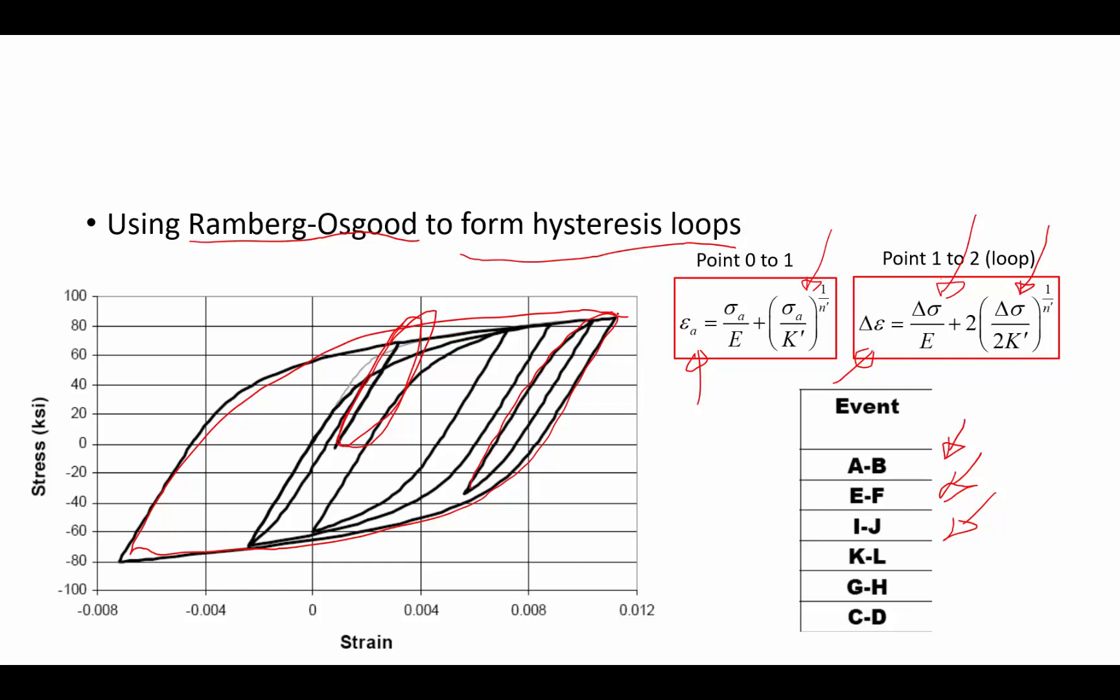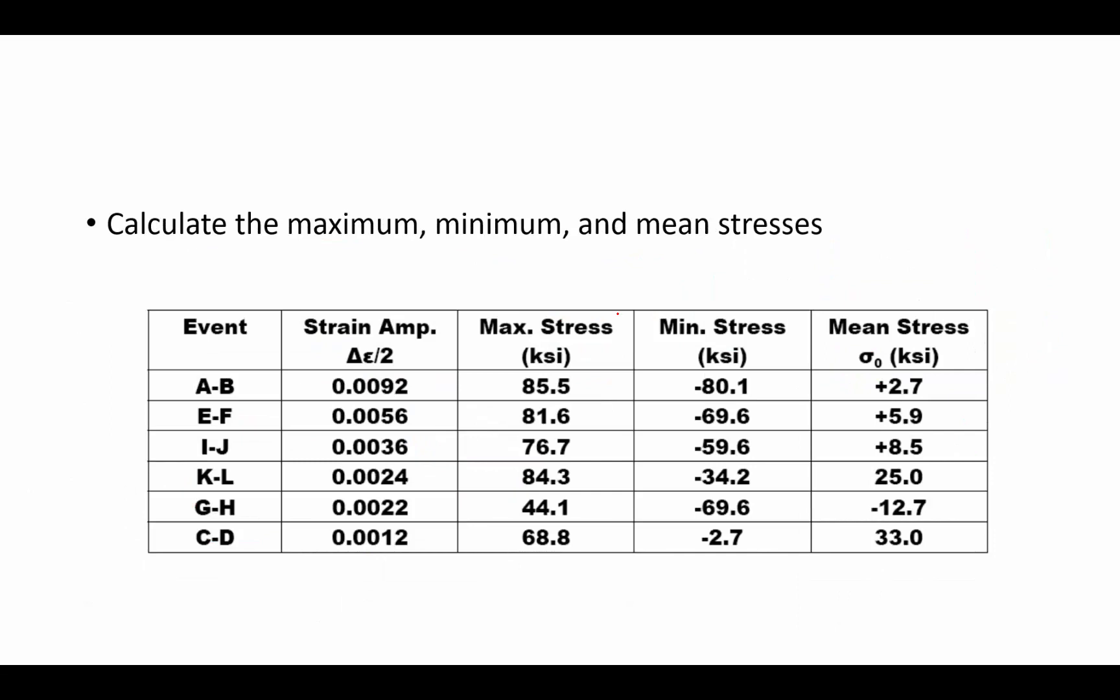Once we've formed these hysteresis loops, then we need to calculate what is the maximum, the minimum, and the mean stresses that these events are happening over. And why? Because then we can calculate what the stress amplitude is and what the value of mean stress, we can then start to calculate or figure out what is the cycles of failure for each of these types of loops.